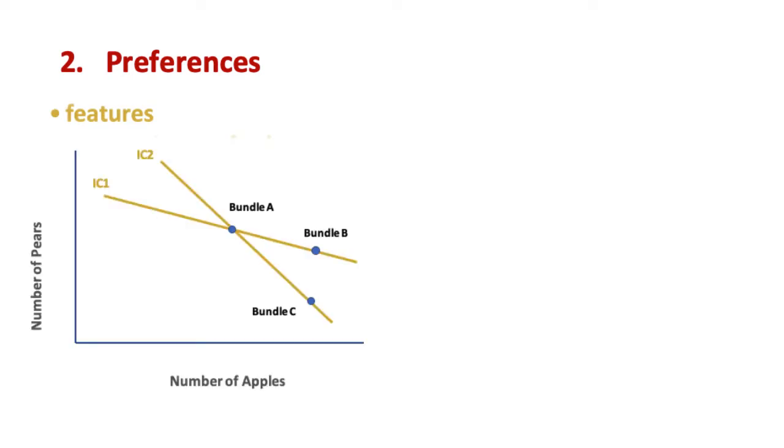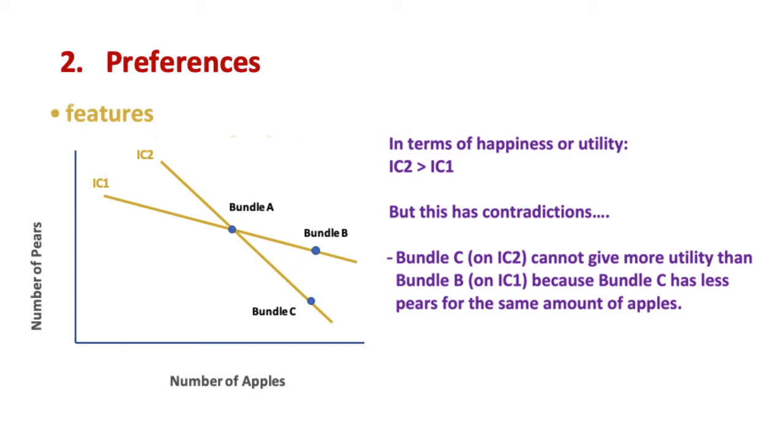Another feature of indifference curves is that they cannot intersect. To illustrate this point, consider the problems that arise in these indifference curves. Indifference curve 2 represents higher utility than indifference curve 1, since it is further away from the origin. Now, let's look at bundles B and C that are on indifference curves 1 and 2 respectively. They both have the same amount of apples, but bundle B has more pears than bundle C. So logically, we would expect bundle B to have higher utility than bundle C. However, bundle B is on the lower indifference curve 1. This is contradictory.